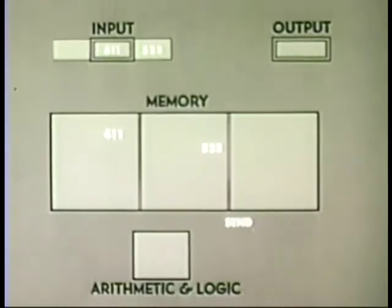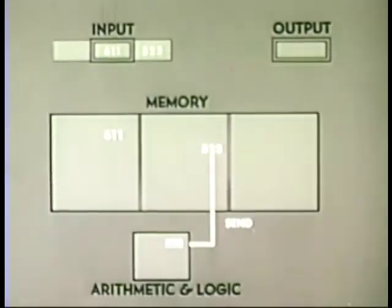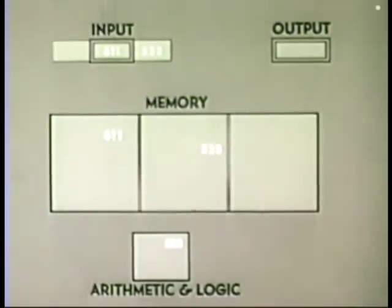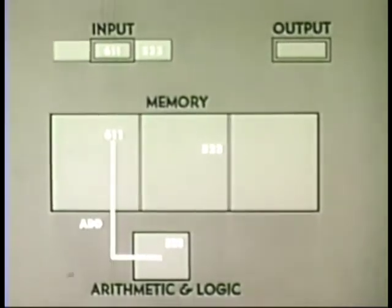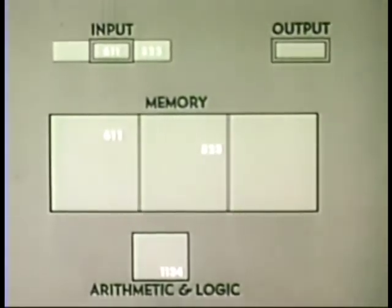Then send 523 to arithmetic and logic. Then add 611 to 523. Then store the result of this addition in memory.